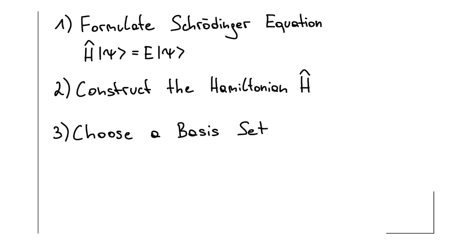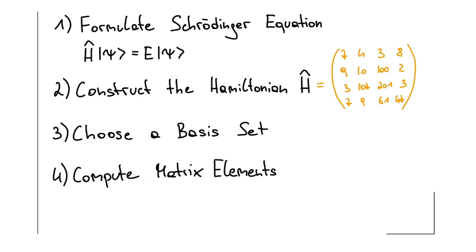Before we calculate the individual matrix elements, let me quickly explain what a matrix actually is. As you can see here, I have written down an example of a matrix. Most of you probably already know this, but for those who don't, a matrix is an object from linear algebra. And what does a matrix do? It takes a vector and produces a new vector. In other words, a matrix is a rule that tells us how a vector changes in space.